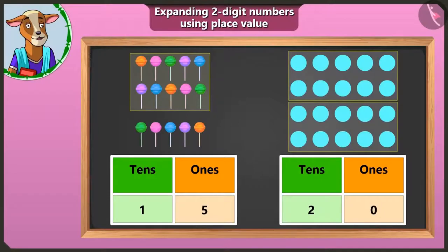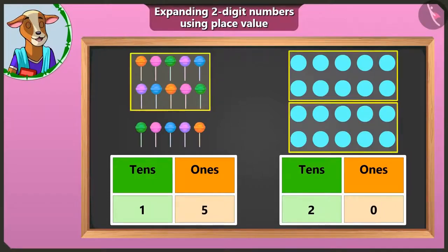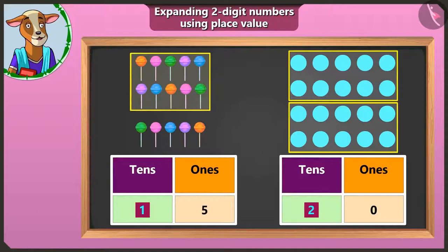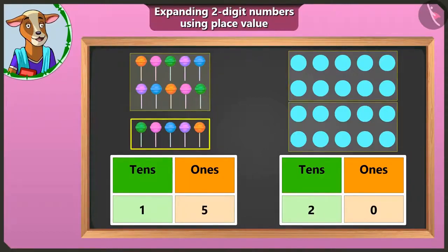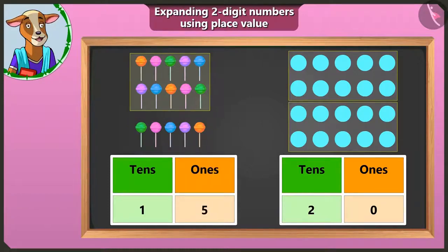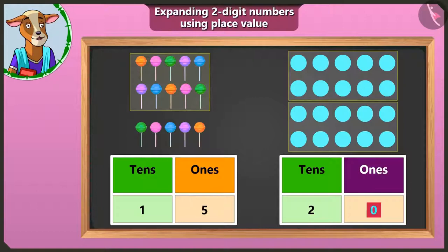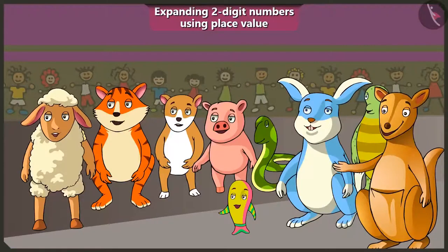So children, remember one thing — as many groups of tens are made, you have to write that number in the tens box. The remaining number will be written in the ones box. If no number is left, then write zero in the ones box. Yes, I will remember for sure, ma'am. Thank you.